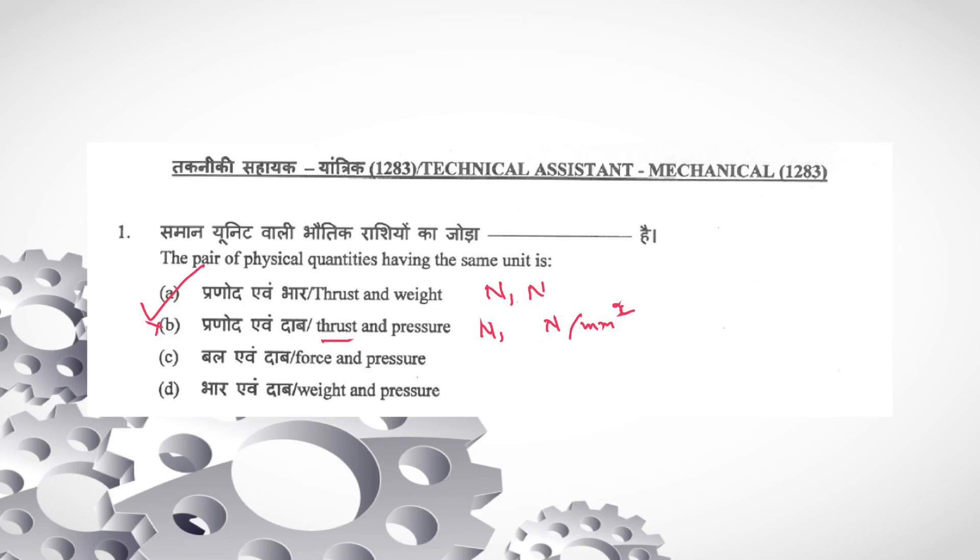C, force unit is Newton. Pressure unit is Newton per mm square or megapascal. C not possible. Weight and pressure: weight unit is Newton, pressure unit is Newton per mm square. So D also not possible. A is your correct answer.